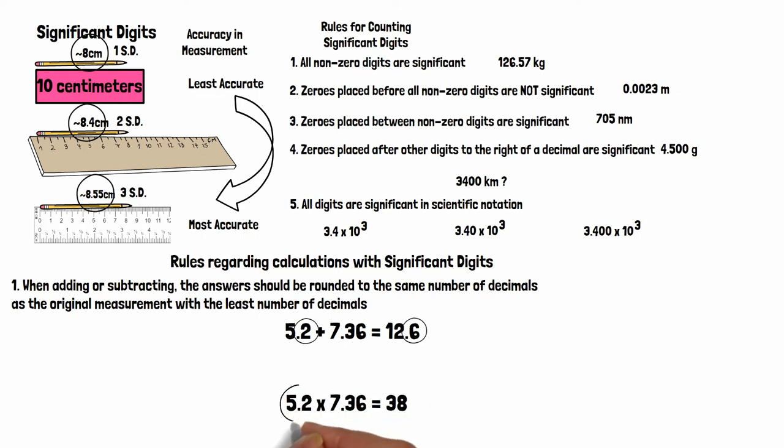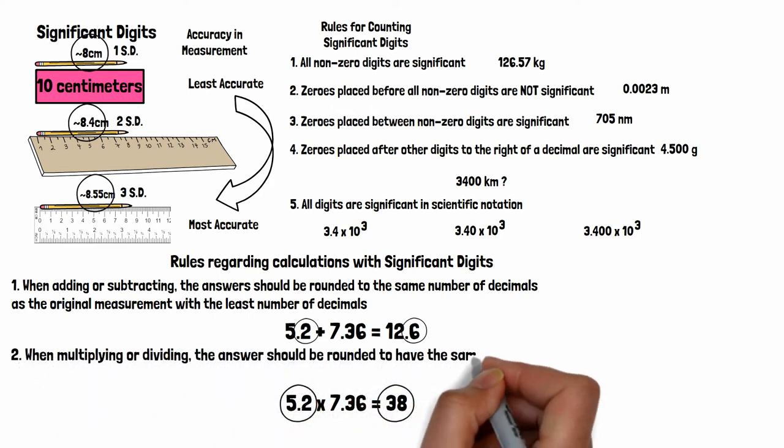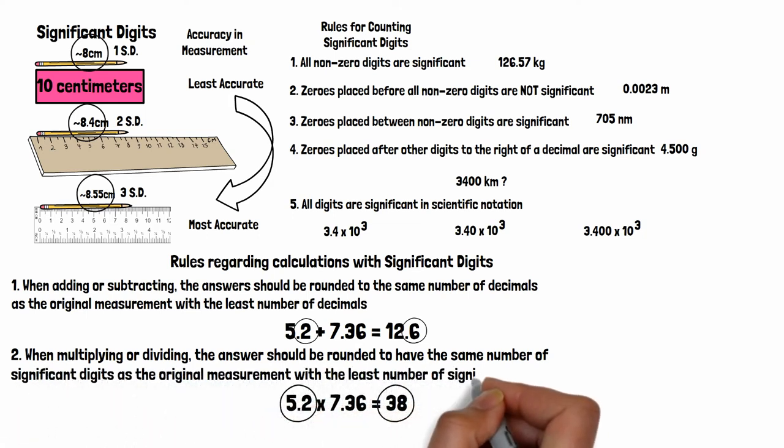When multiplying or dividing, we look at significant digits. Here the first number has two significant digits and the second has three. So our answer can only have two. Always look for the weakest link in your measurements.